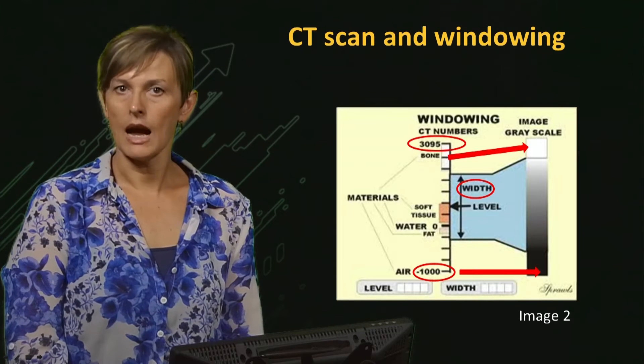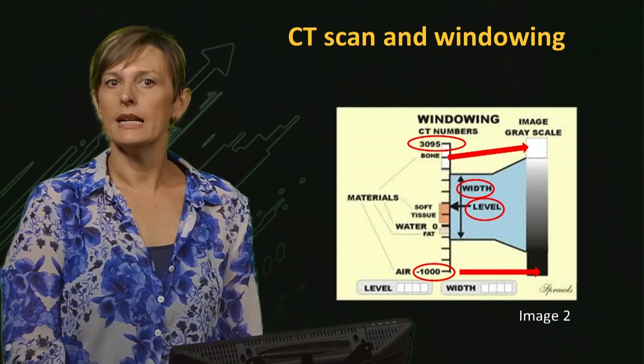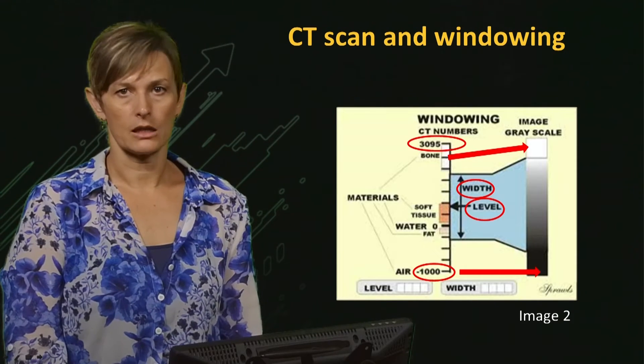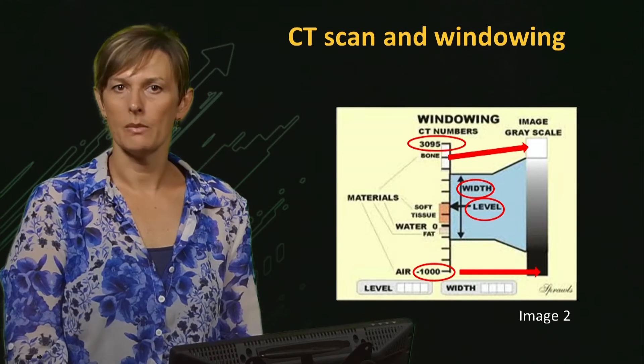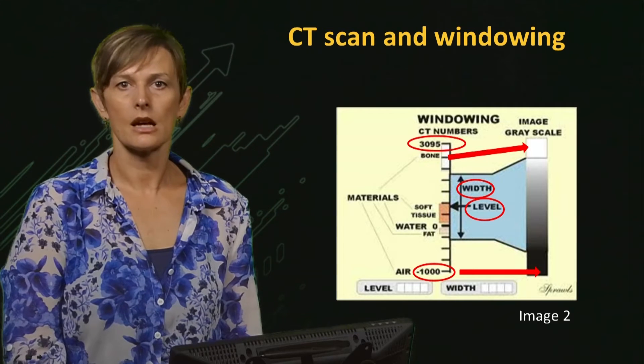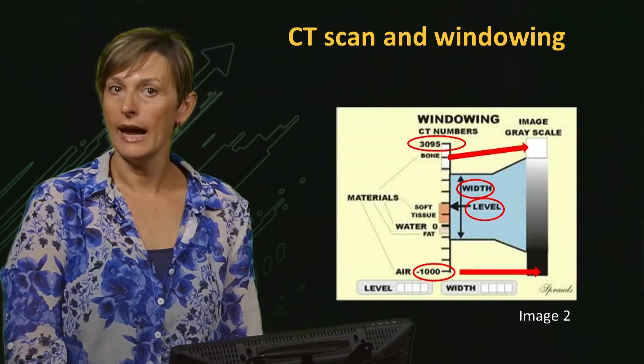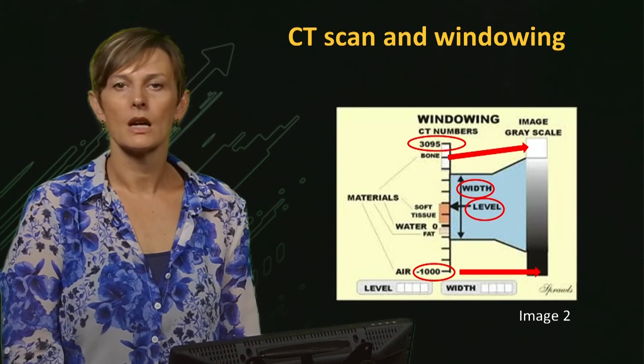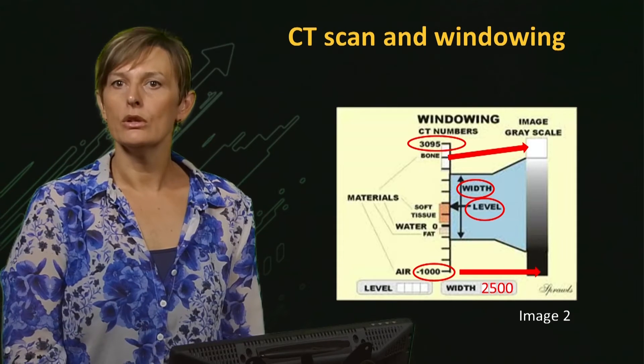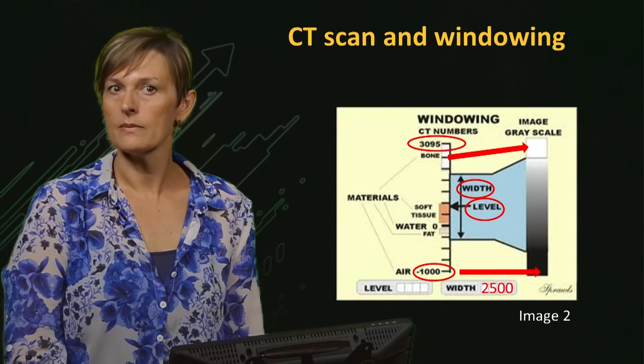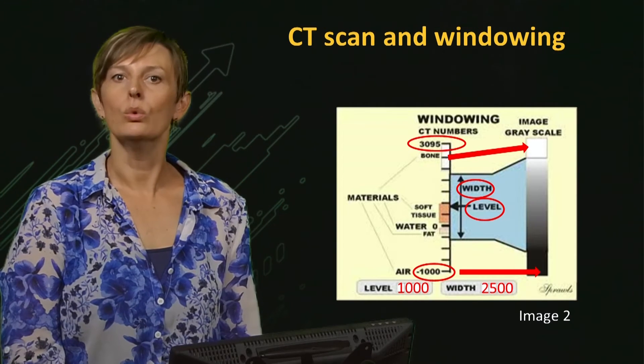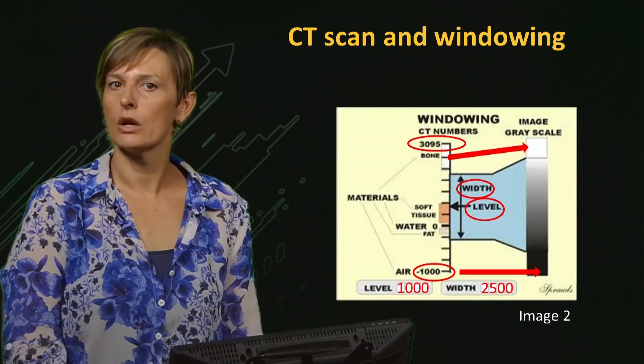The second factor, L, is the window level. It controls and adjusts the center of the window width. This factor can be used to optimize the image contrast within an organ. In practice, a variety of different values of L and W are used. For example, during bone imaging, W would be set to 2500 and L to 1000 HU. And the window would be shifted up towards the wide scale.